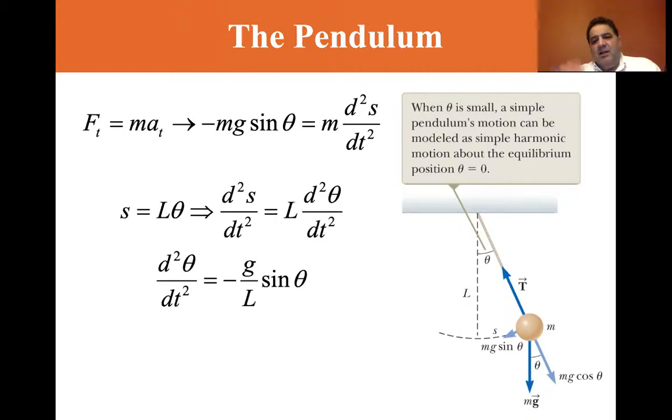So s is equal to L theta. In other words, s is equal to length times theta. d²s/dt² is equal to L d²theta/dt². Let's see where my writings are. And so if we substitute that, if we look up at the top, we had minus mg sine theta equals m d²s/dt². The m's come out. So d²s/dt² is equal to minus g sine theta. We use that in combination with the L d²theta/dt² to get d²theta/dt² equals minus g/L sine theta.